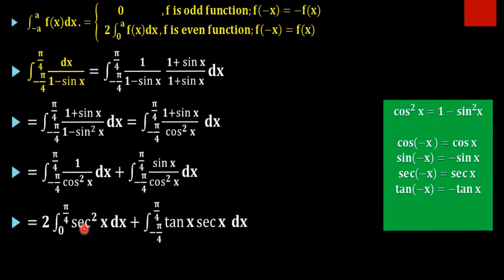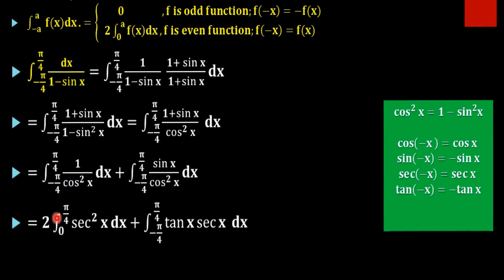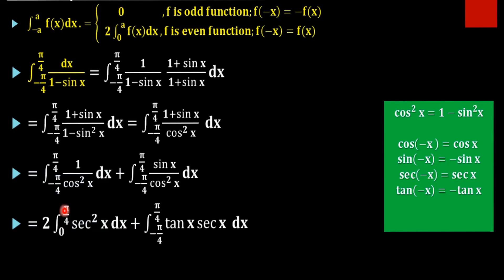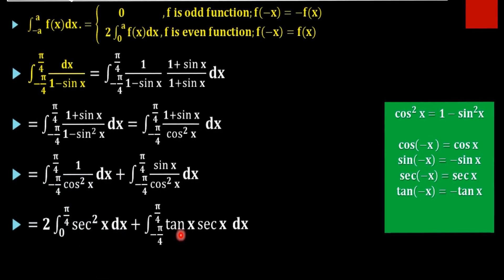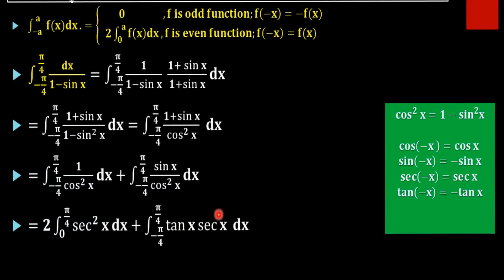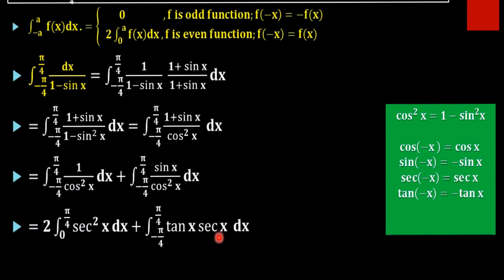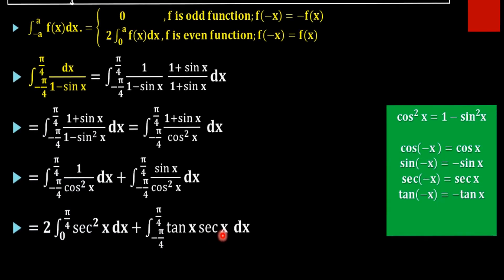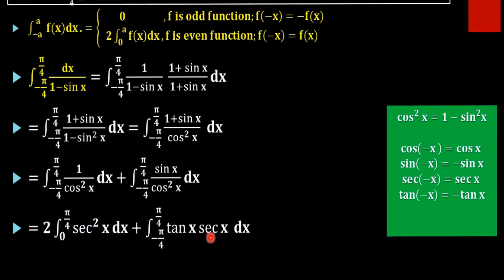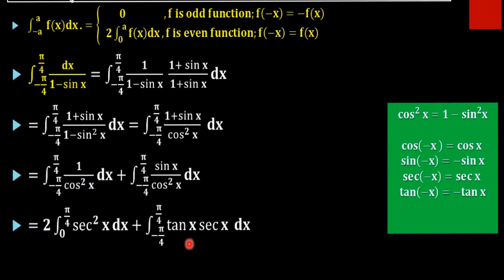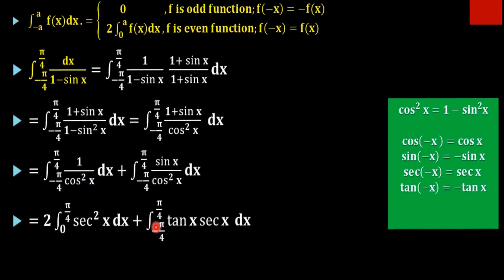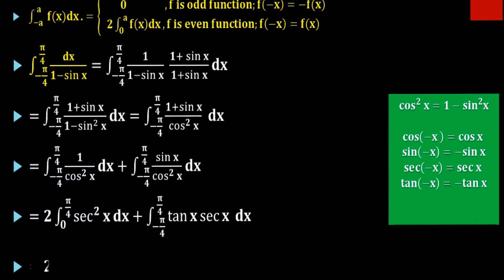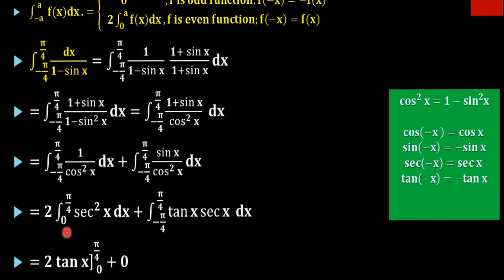Now, sec squared x is an even function, so its integral on a symmetric interval can be rewritten using the even-function property. For the second term, tan x times sec x — substituting negative x gives negative tan x times sec x, making it an odd function. Therefore, the second integral becomes 0 as per the symmetry property.